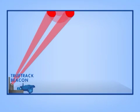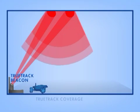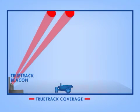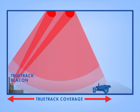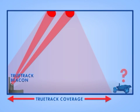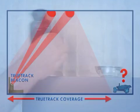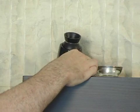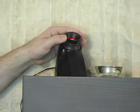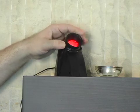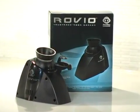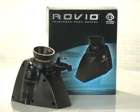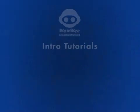For this feature, it's important to have good TrueTrack coverage along your route. Rovio will try to find its way through some weak areas, but better coverage will always make for a better route. You can enhance the quality of your TrueTrack coverage within a room as well as expand to cover other rooms by using additional TrueTrack room beacons, which are available from Wowie.